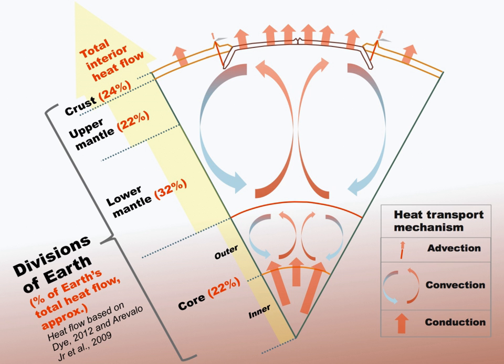The inner core is believed to be composed of an iron-nickel alloy with some other elements. The temperature at the inner core's surface is estimated to be approximately 5,700 K, or 9,806 degrees Fahrenheit, which is about the temperature at the surface of the Sun.